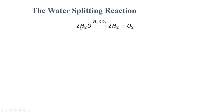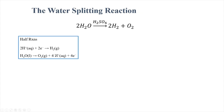Now let's look at the water splitting reaction. We're taking two water molecules and breaking them into hydrogen and oxygen in the presence of an acid. The acid — sulfuric acid — provides H⁺. The half-reactions are: 2H⁺ + 2e⁻ → H₂ at the cathode, and oxidation of water producing O₂, 4H⁺, and 4e⁻ at the anode. Combining these gives the overall cell reaction.